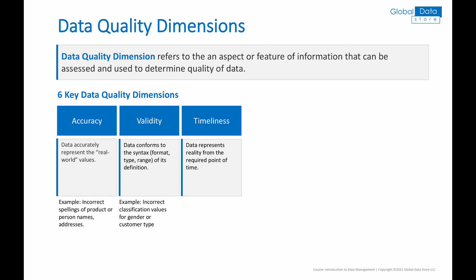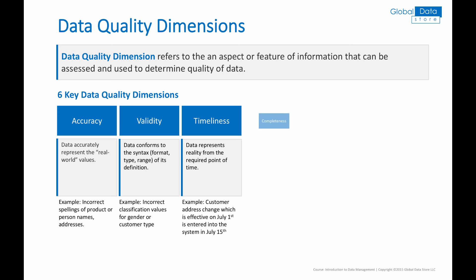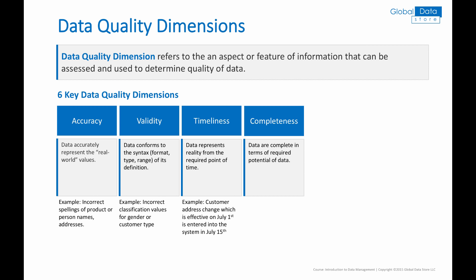Timeliness: data represents reality from the required point in time. A typical example is a customer address change that is effective on July 1st but is entered into the system on July 15th. Completeness: data are complete in terms of required potential of data. A typical example is a customer address missing a zip code.